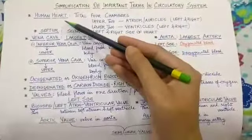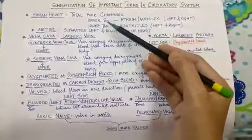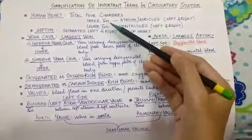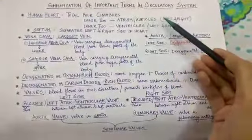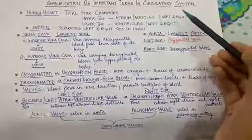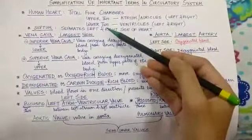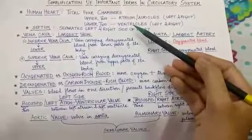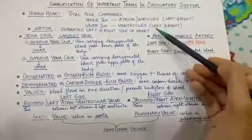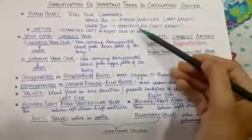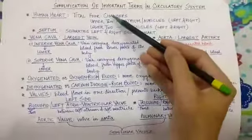The human heart has a total of four chambers. The upper two chambers are known as atrium or auricles, which are on either side — left and right. The corresponding lower chambers are known as ventricles, again on either side of the heart: the left ventricle and the right ventricle. So the human heart has a total of four chambers.